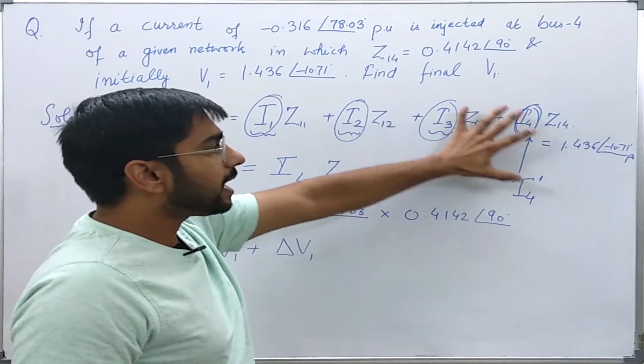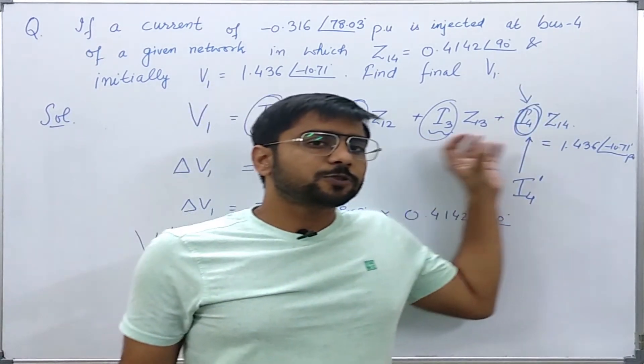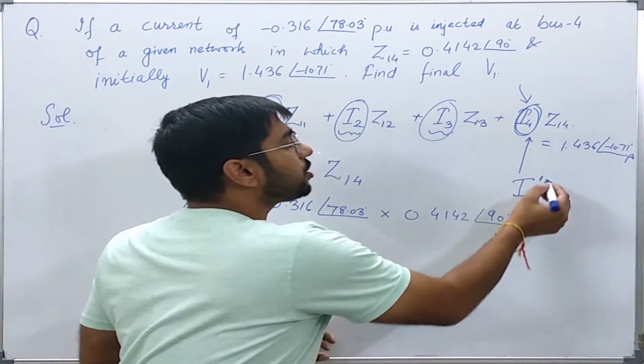You note that earlier there could already be some current at bus 4. Now we are just finding the effect of the new current source injected.